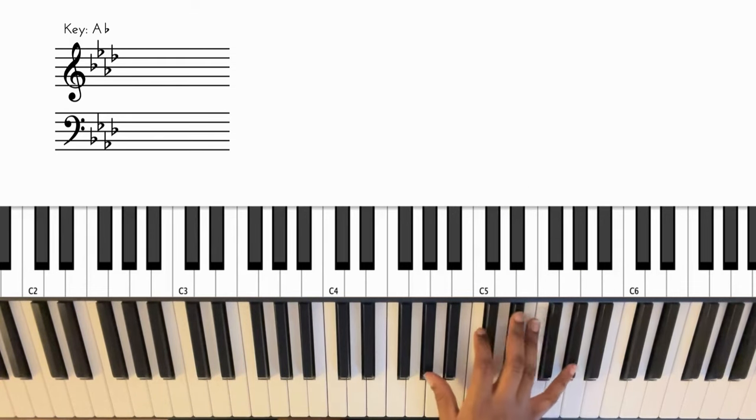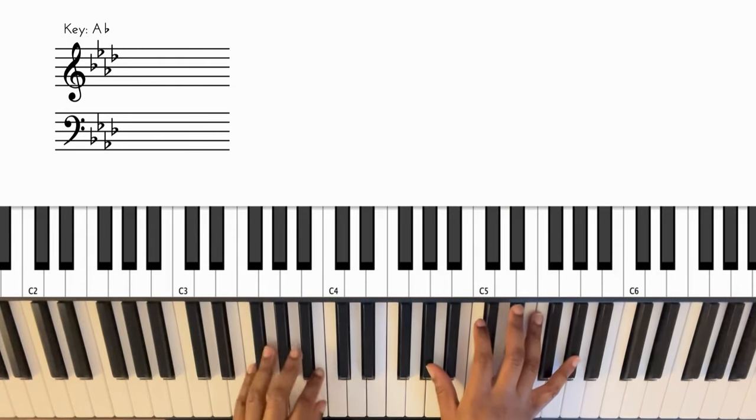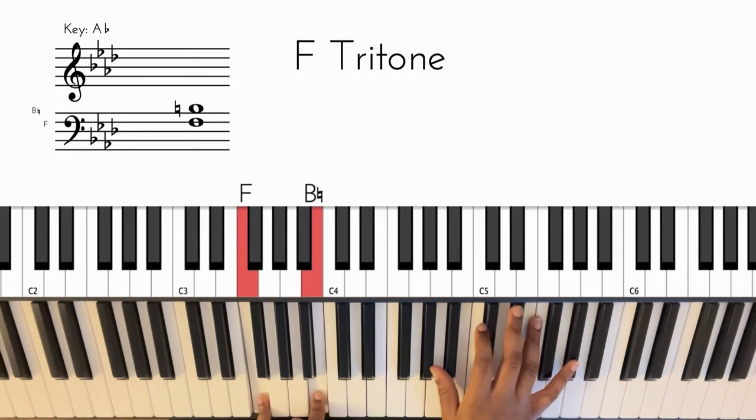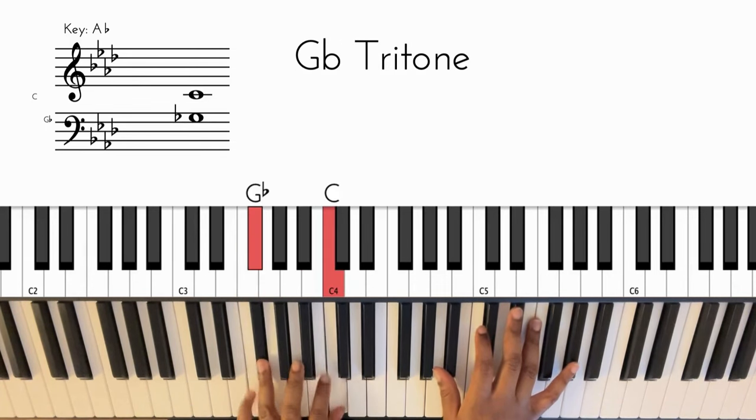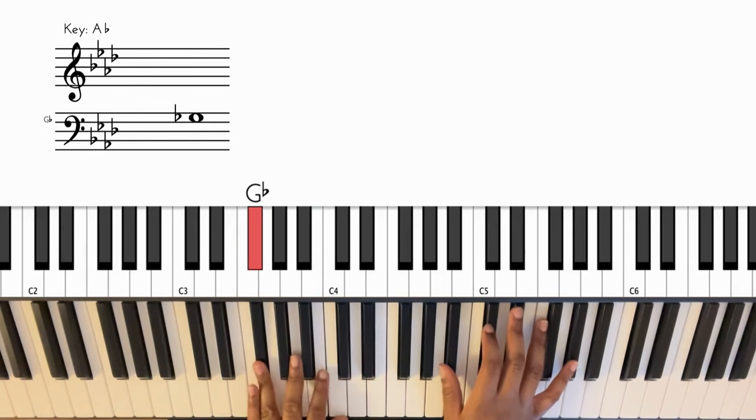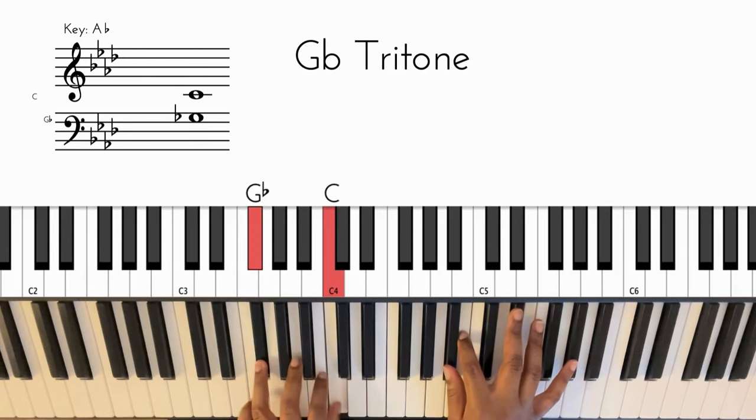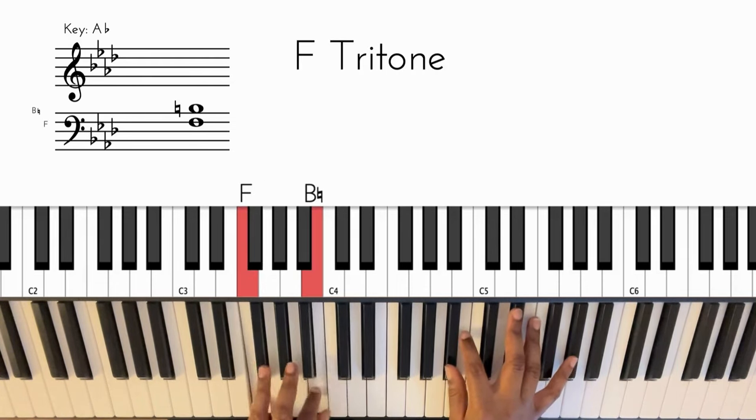And then my right and my left hand comes in hitting that tritone movement, F and B. And then you move that up a half step to F sharp and C. That kind of like resets the move.